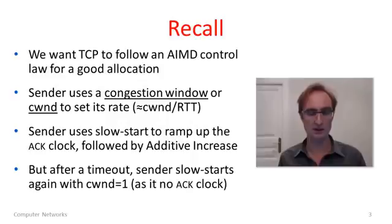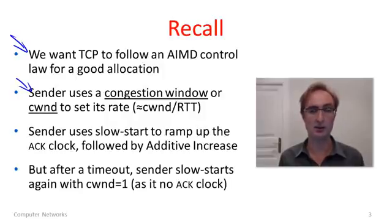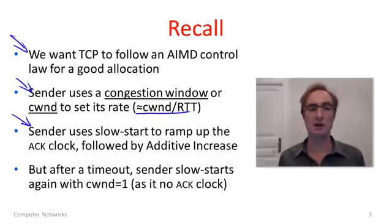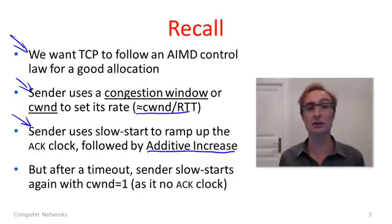Just a little bit of context to refresh your memory. We're trying to get to this additive increase multiplicative decrease controller — it has good properties. We're doing it by having the sender control a congestion window, increasing or decreasing it, which indirectly controls the rate. We've seen that the sender can use slow start to rapidly increase the congestion window to about the right size, and then use additive increase around the right congestion window.